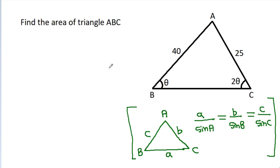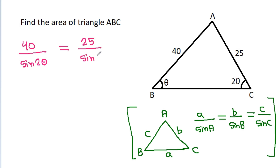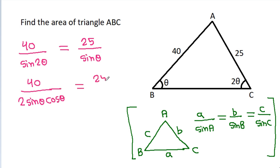Applying the sine rule here: 40 divided by sine 2 theta equals 25 divided by sine theta. Since sine 2 theta equals 2 sine theta cos theta, we get 40 divided by 2 sine theta cos theta equals 25 divided by sine theta.